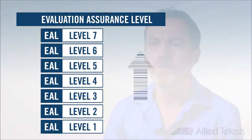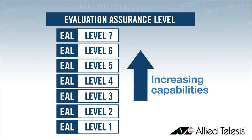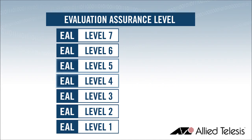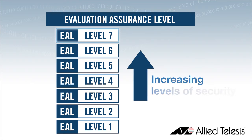Evaluation Assurance Level, or EAL, is a numerical rating that was used to describe the depth and rigour of an evaluation. Each EAL corresponded to a package of security assurance requirements which cover the complete development of a product within a given level of strictness. There were seven levels, with EAL 1 being the most basic and therefore the cheapest to implement and evaluate, up to EAL 7 being the most stringent and therefore the most expensive.